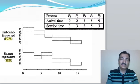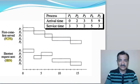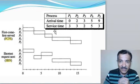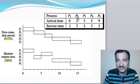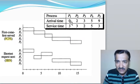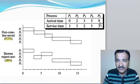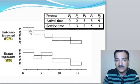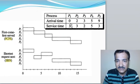Now for first come first serve, whichever process comes first executes first. We have 5 processes. Process 1 arrives at 0 seconds, process 2 at 2 seconds, process 3 at 3 seconds, process 4 at 5 seconds, and process 5 at 9 seconds. So naturally it executes in linear fashion. Process 1, arriving at 0 seconds, executes for 3 seconds because its service time is 3 seconds.